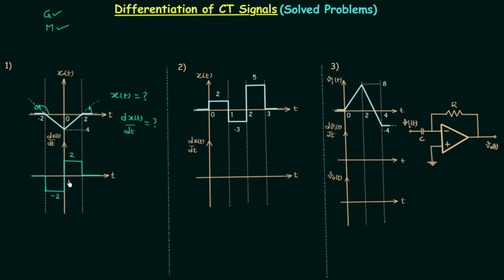You can see it is very easy to obtain the waveform of the differentiated signal using the graphical method. Now we will solve the second problem, doing the same thing. We will start from the left: from minus infinity to zero, signal x(t) is equal to zero — it is a constant — so the slope is going to be zero.